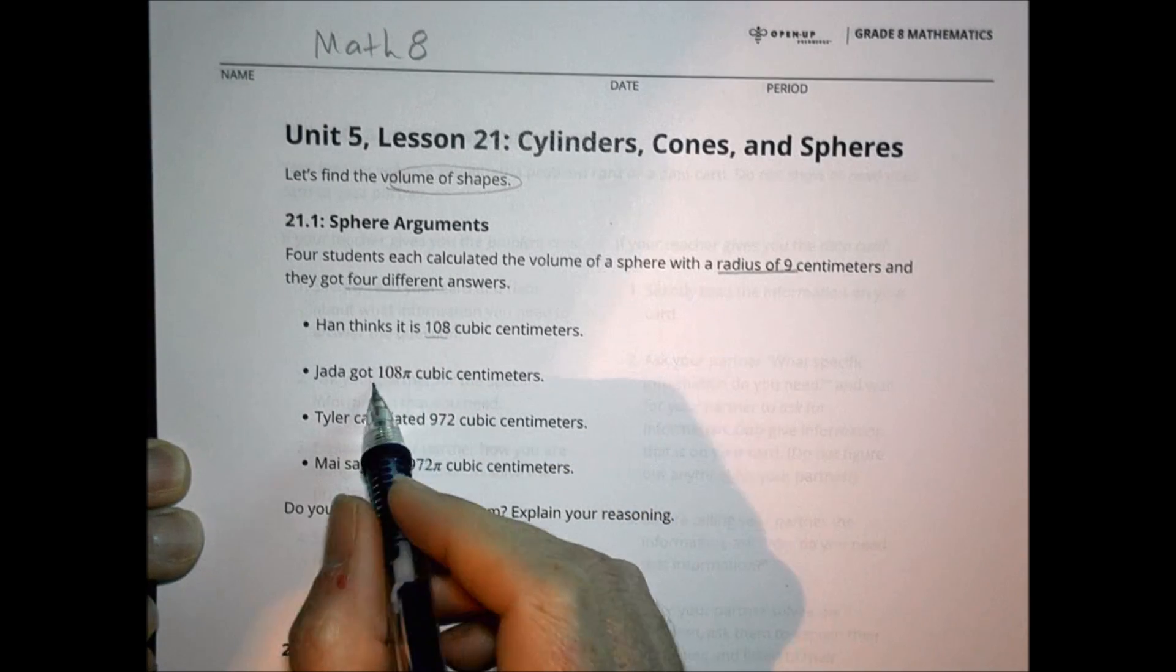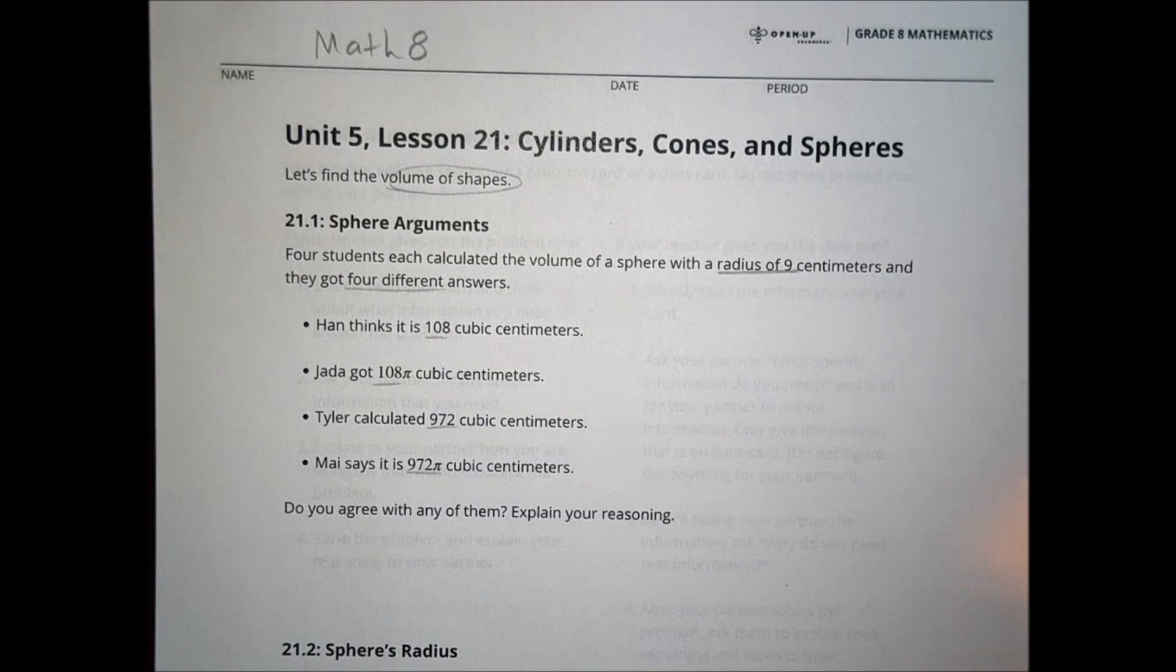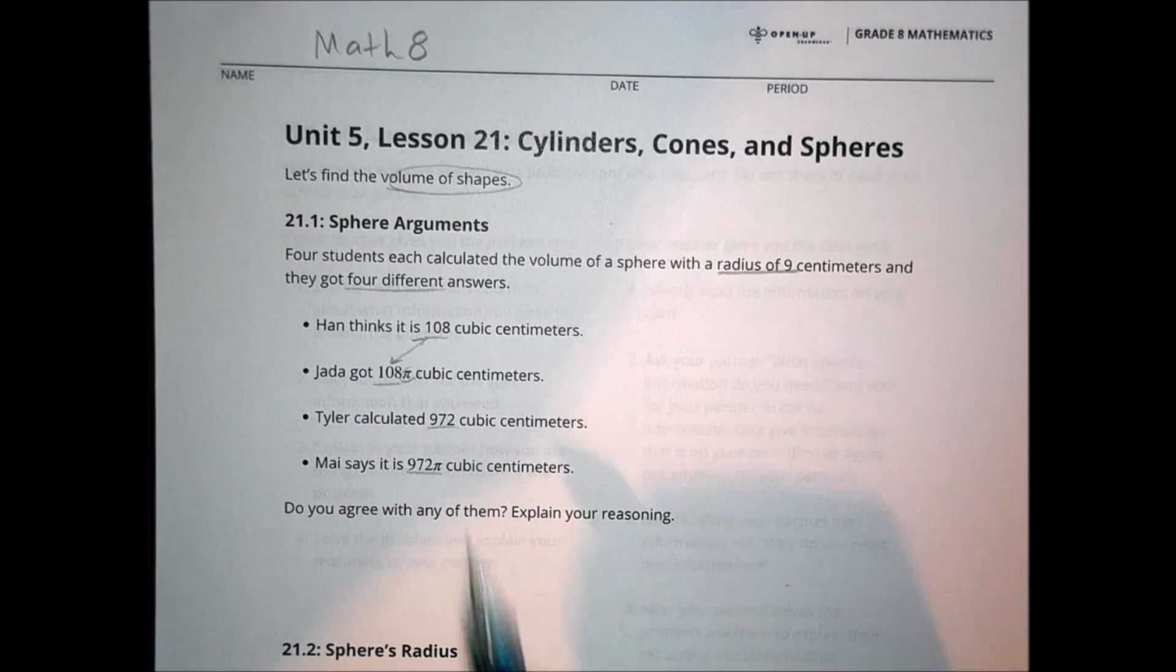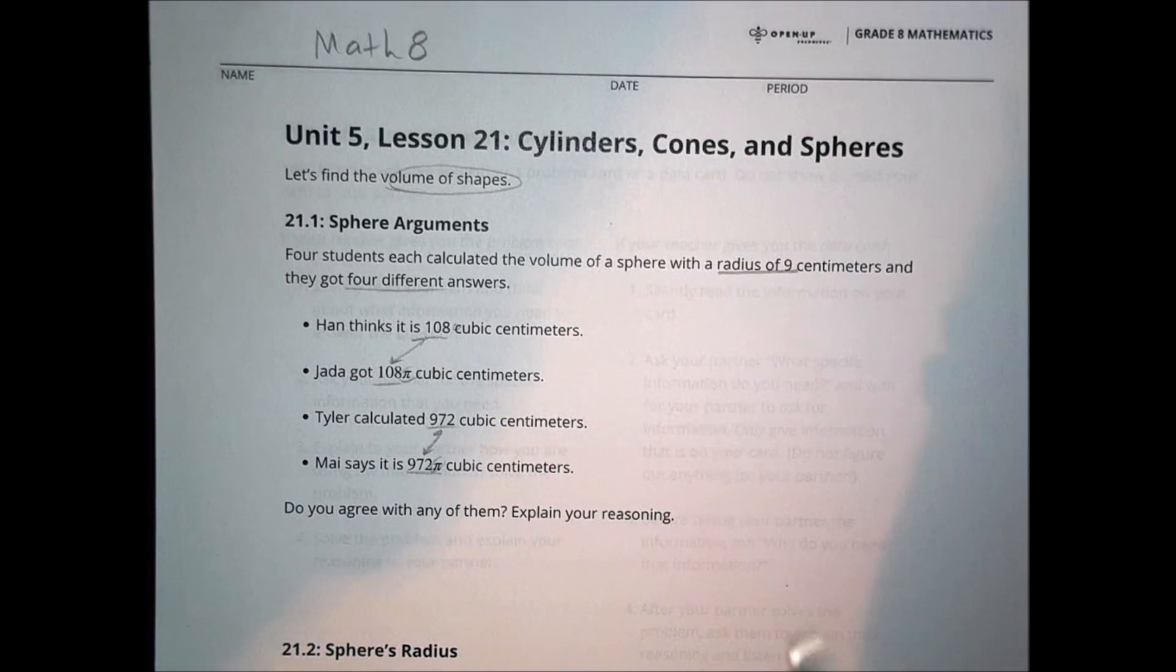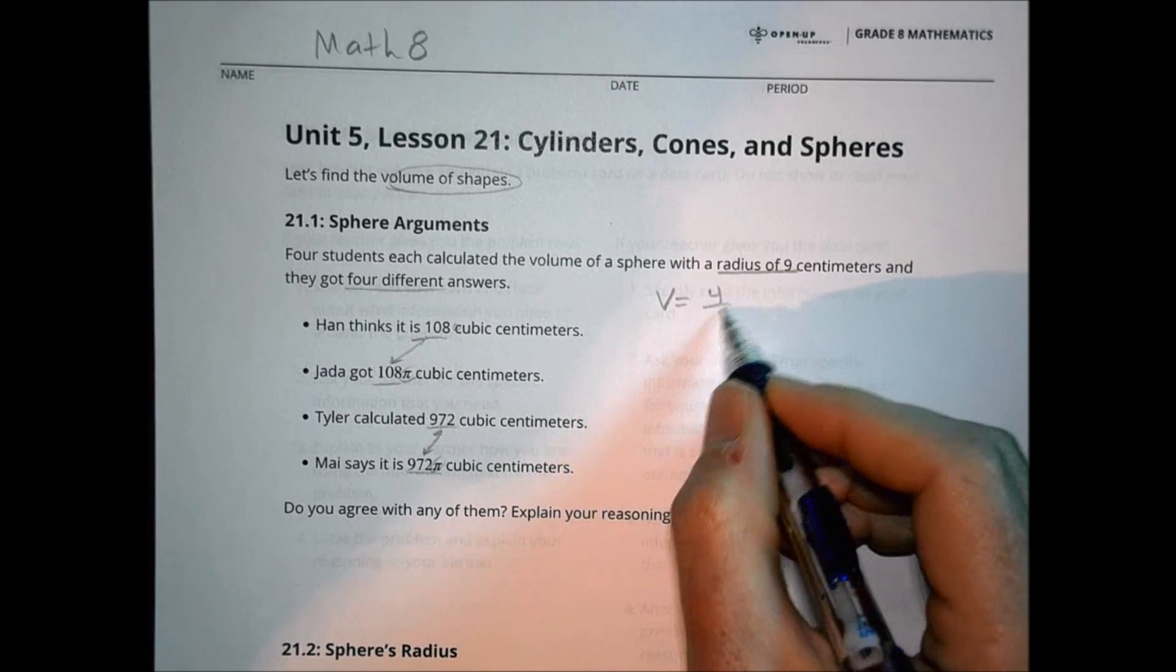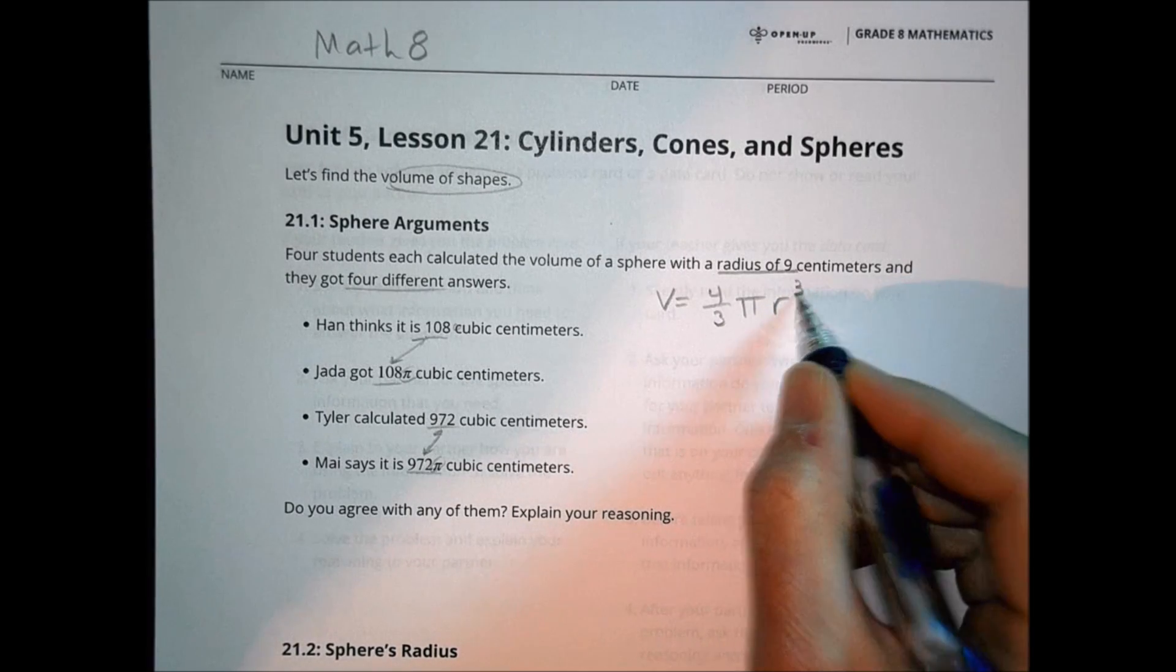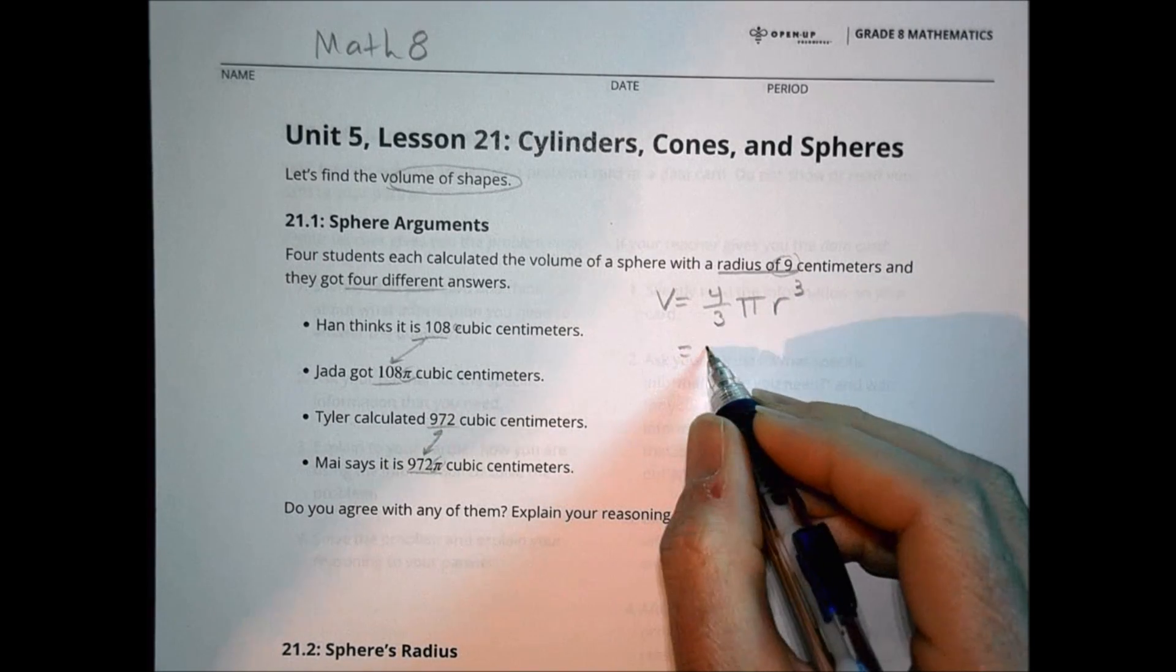We have 108, 108 pi, 972, and 972 pi. Really there's some calculation errors that get you to 108, and someone forgot a pi or didn't include pi, then we have 972 with and without a pi. So let's see what we should get here. If the formula for the volume of a sphere is 4 thirds times pi times the radius cubed, and they gave us the radius of the value of 9, let's see what we should come up with.